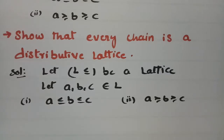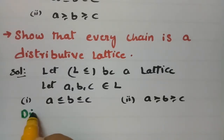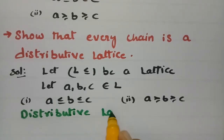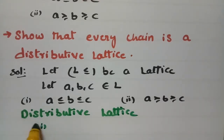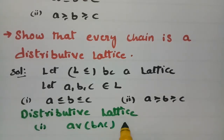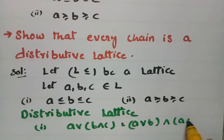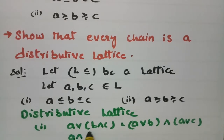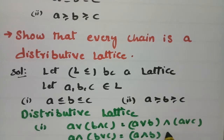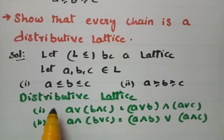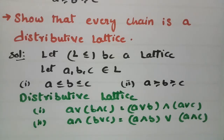According to the distributive lattice, there are two conditions. The first one is: A ∨ (B ∧ C) = (A ∨ B) ∧ (A ∨ C). The second one is: A ∧ (B ∨ C) = (A ∧ B) ∨ (A ∧ C). These are the two conditions of the distributive law, and both should be verified.